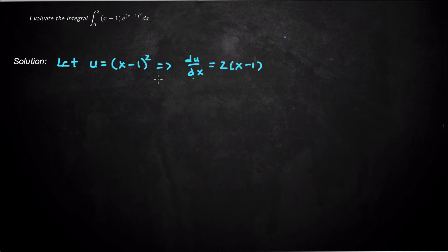In differential form we can rewrite this as du = 2(x-1)dx. In my integrand I have (x-1)dx but not the extra 2, so I can say that ½du = (x-1)dx.